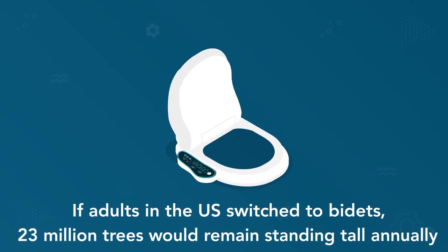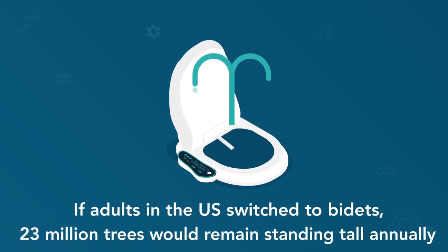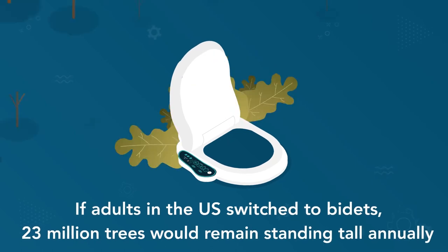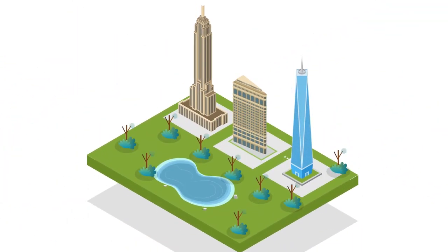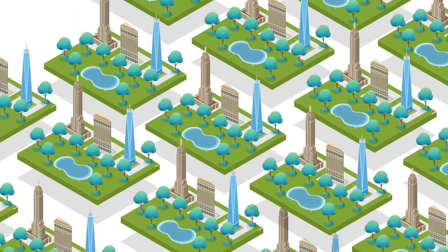If adults in the U.S. switched to bidets, 23 million trees would remain standing tall annually. That's enough to fill up New York Central Park 1,162 times.